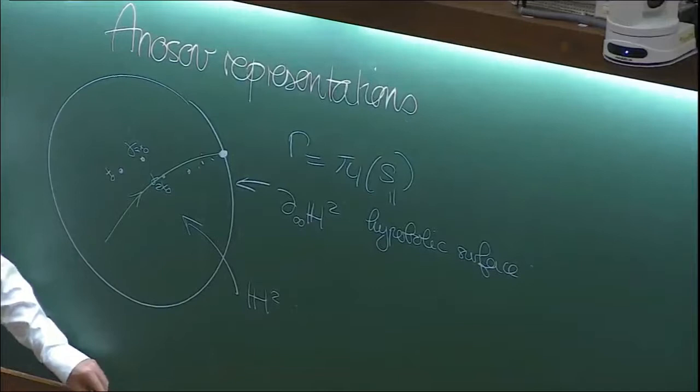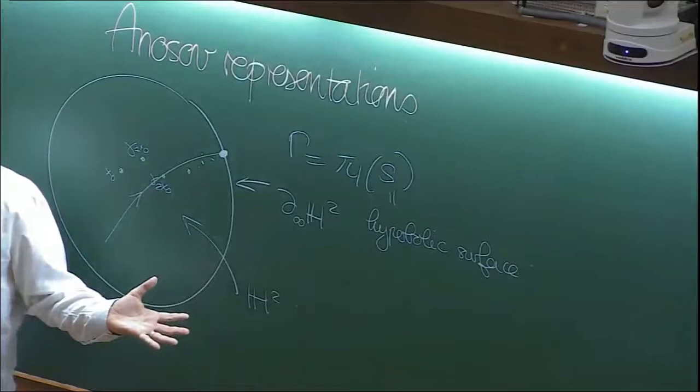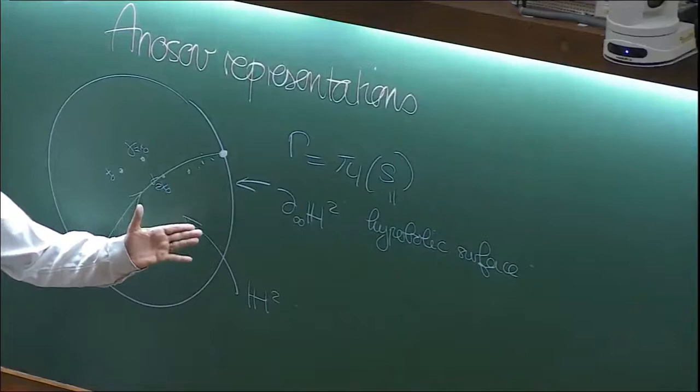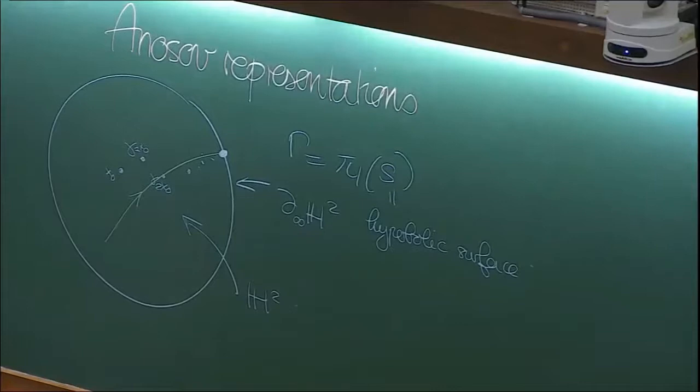For hyperbolic surfaces, there is a beautiful dictionary between the action of gamma on its boundary at infinity and the action of the geodesic flow on the unit tangent bundle. I will try to follow the approach of translating the role of some geodesic flow. The reason for that is that discrete groups are hard, but continuous groups are much simpler to deal with.